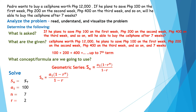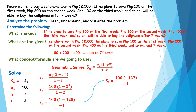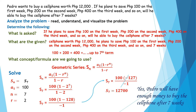The common ratio r = 2. Substituting into the formula: S_7 = 100 × (1 − 2^7) / (1 − 2) = 100 × (1 − 128) / (−1) = 100 × (−127) / (−1). The negatives cancel, giving S_7 = 100 × 127 = 12,700.